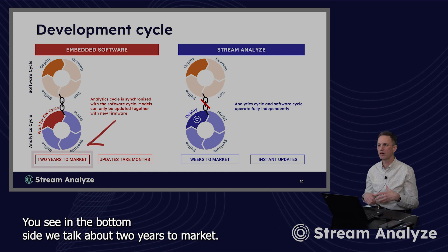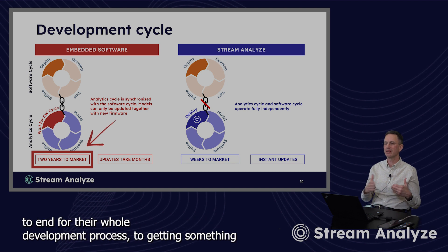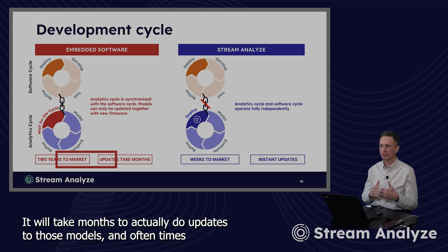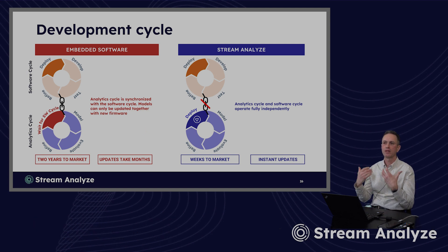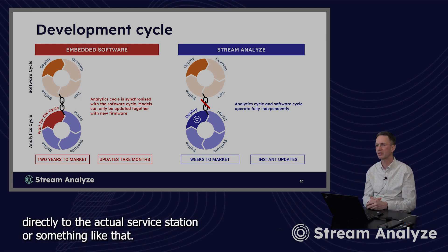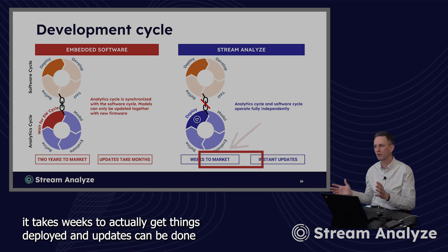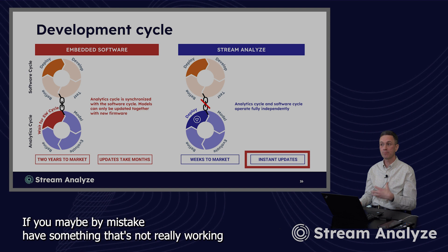On the bottom side, we talk about two years to market. This is based on some of the customers we've been working with, getting from end to end through their whole development process to getting something into production — it would take two years to actually get that to happen. It would take months to actually do updates to those models, and oftentimes it couldn't be done over the air but had to be brought in directly to the actual service station. Whereas on the right hand side, we see that it takes weeks to actually get things deployed and updates can be done instantaneously and rolled back, which is really brilliant if you maybe by mistake have something that's not really working out there in production.